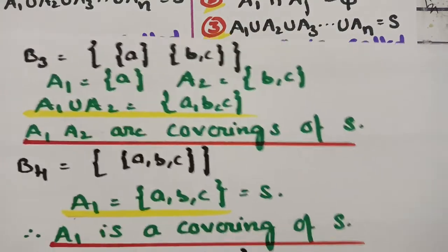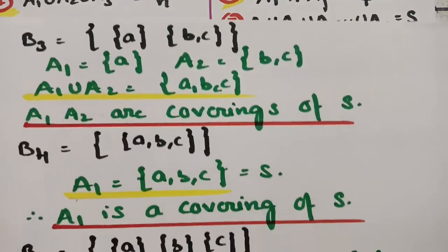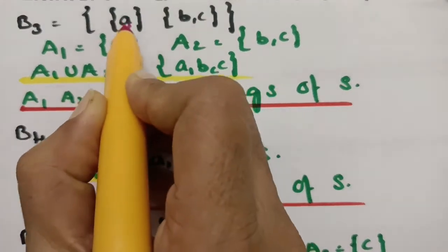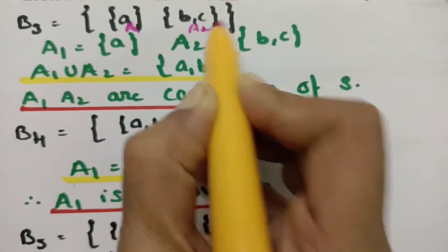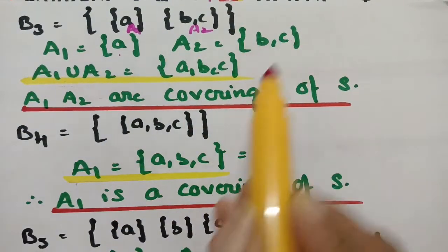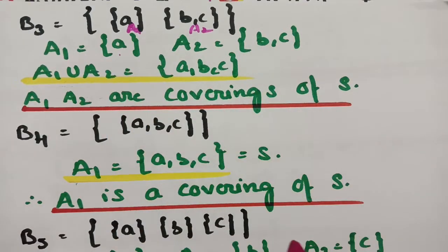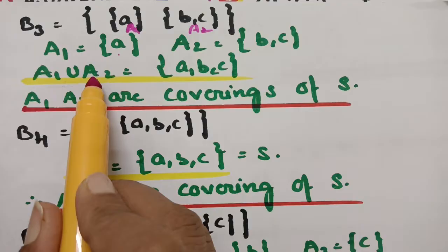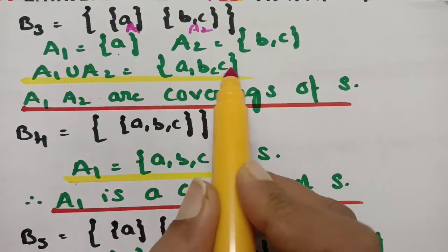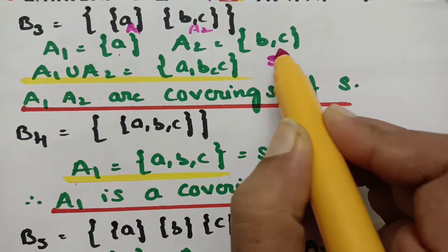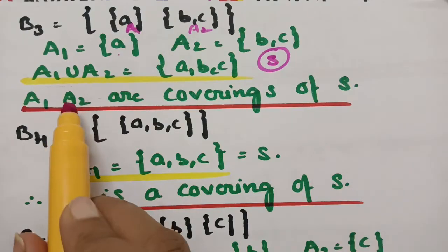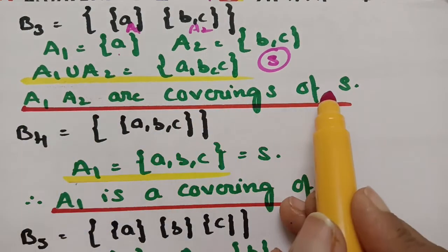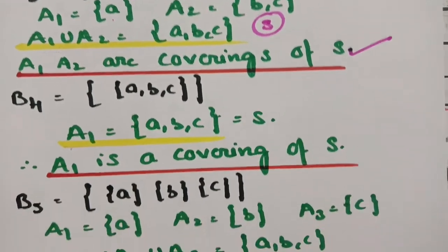Coming to B3, there are two subsets: A1 = {A} and A2 = {B, C}. There can be common elements — that is allowed. The union of A1 and A2 gives {A, B, C}, which is nothing but the main set S. Therefore A1 and A2 are the coverings of S. This condition is satisfied.